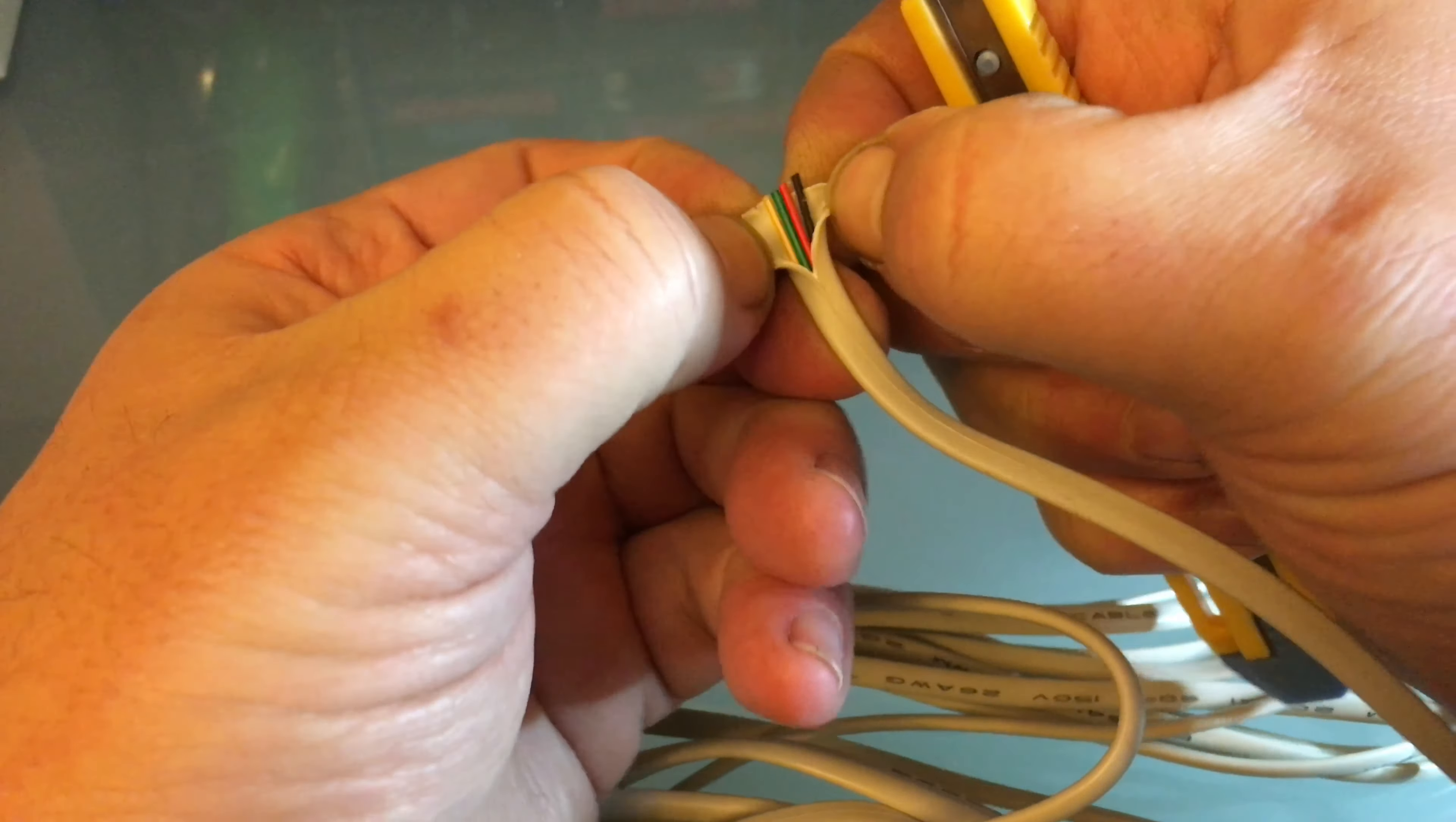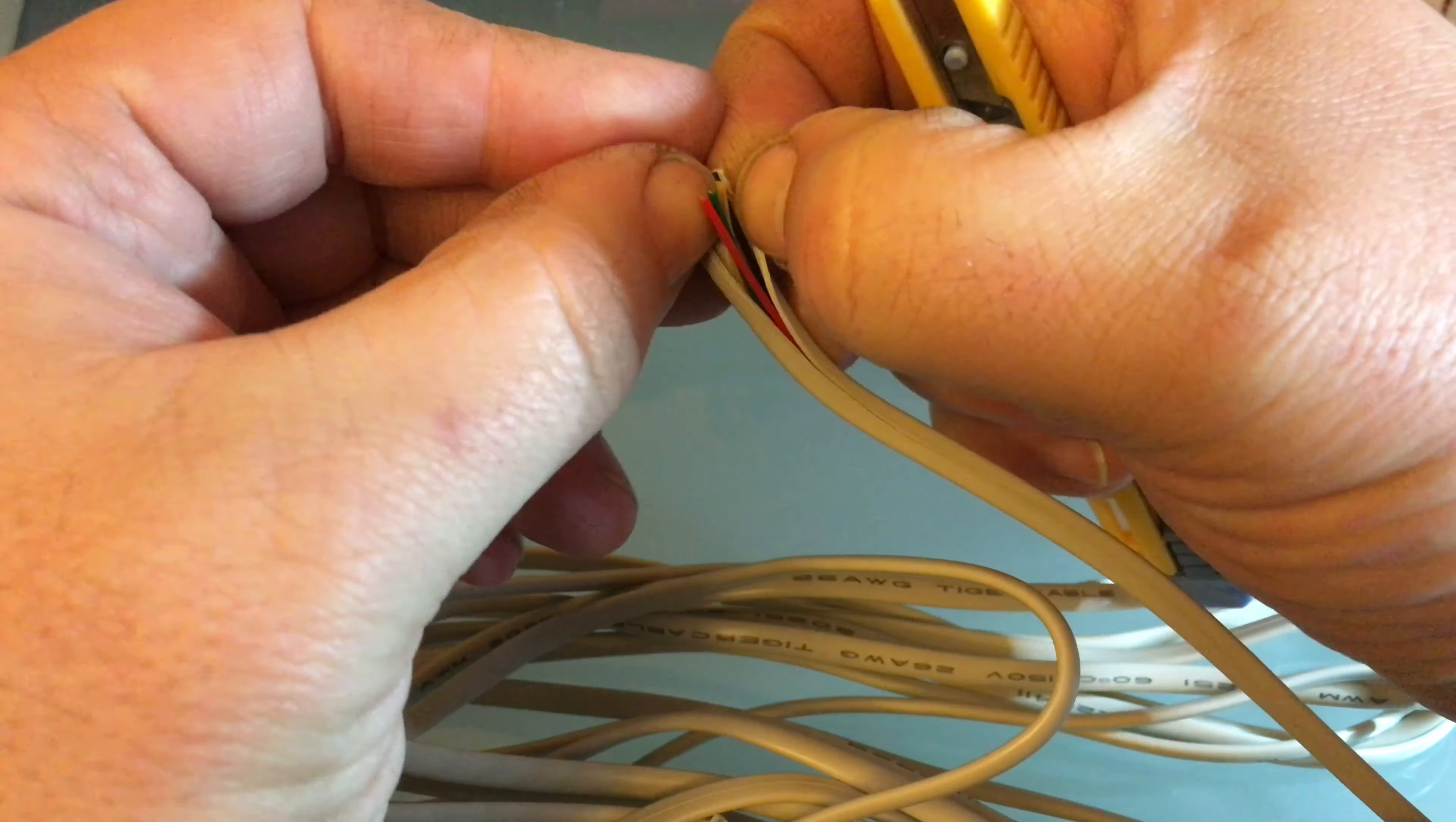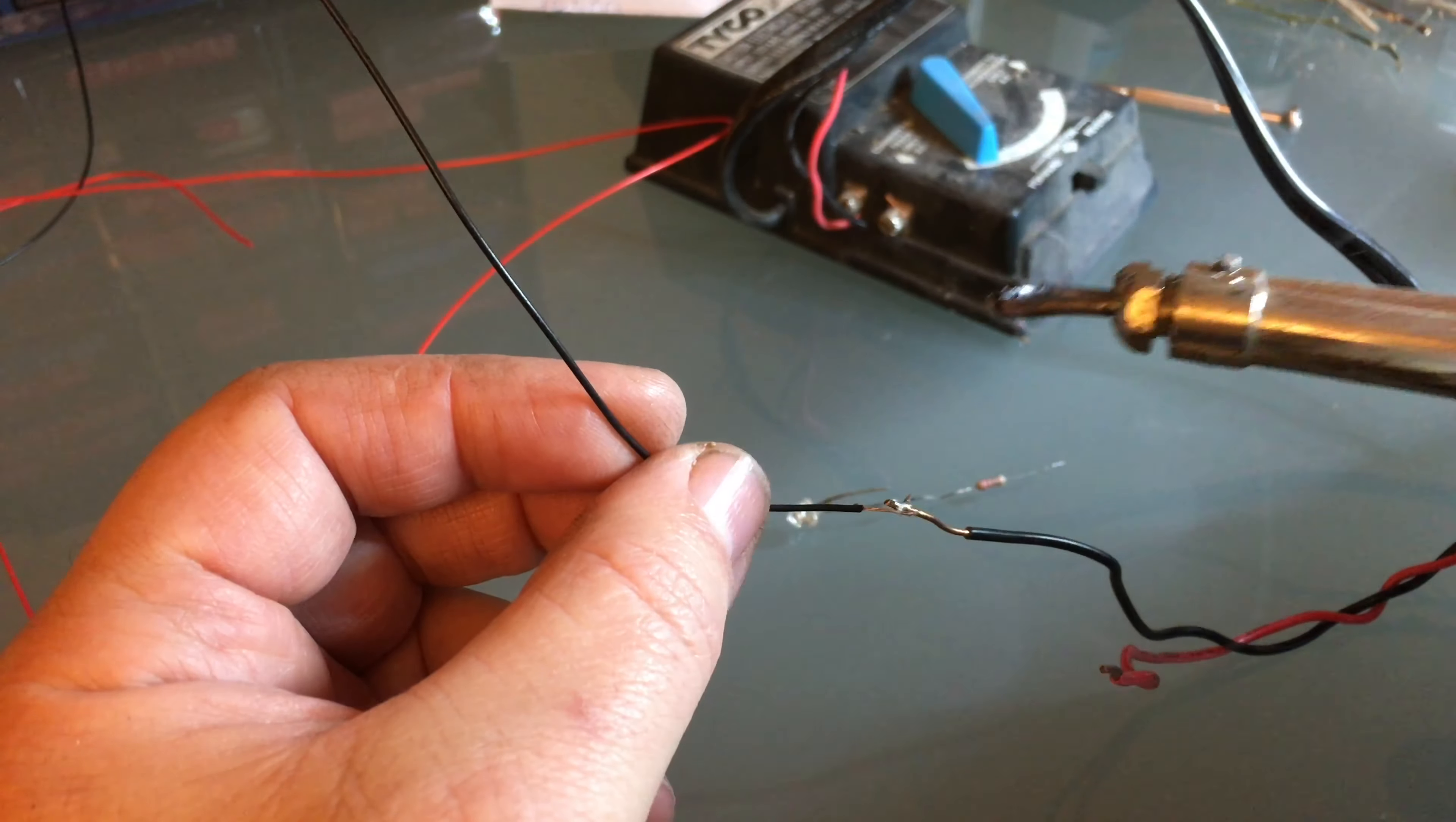So just this extension cord is gonna last me for years. I don't think I'm gonna be too fussy about the color that I'm using. I've been using the red and black for a while and then the yellow and green for another while. So I'm gonna keep stripping this out. I always pre-tin my wires before I try to connect them. That is the best practice.